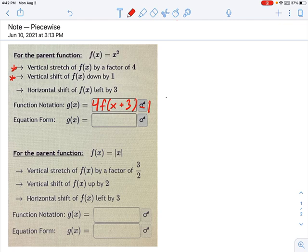Now, when it asks for equation form, what that means is you get the f out of there. You basically substitute this equation in for f. So this is 4 times what? What is f of x? Well, f of x is x squared. That's f.